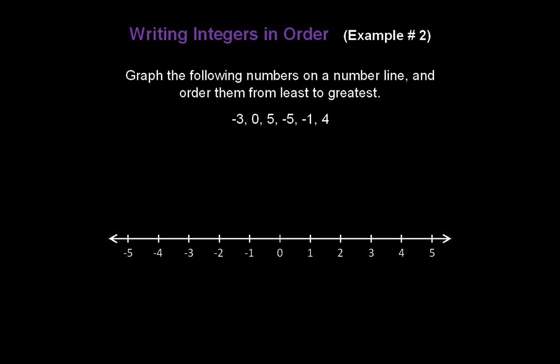Now let's write integers in order. Graph the following numbers on a number line, and then order them from least to greatest. First, let's go ahead and graph each number on a number line, starting with negative 3, then 0, 5, negative 5, negative 1, and positive 4.